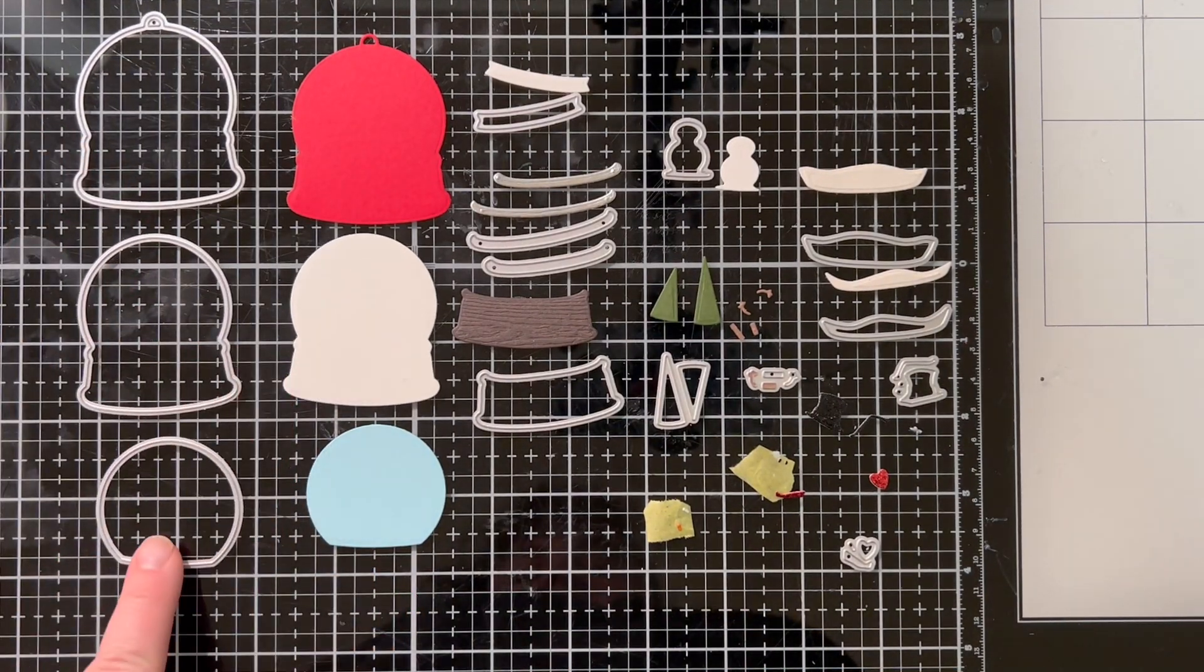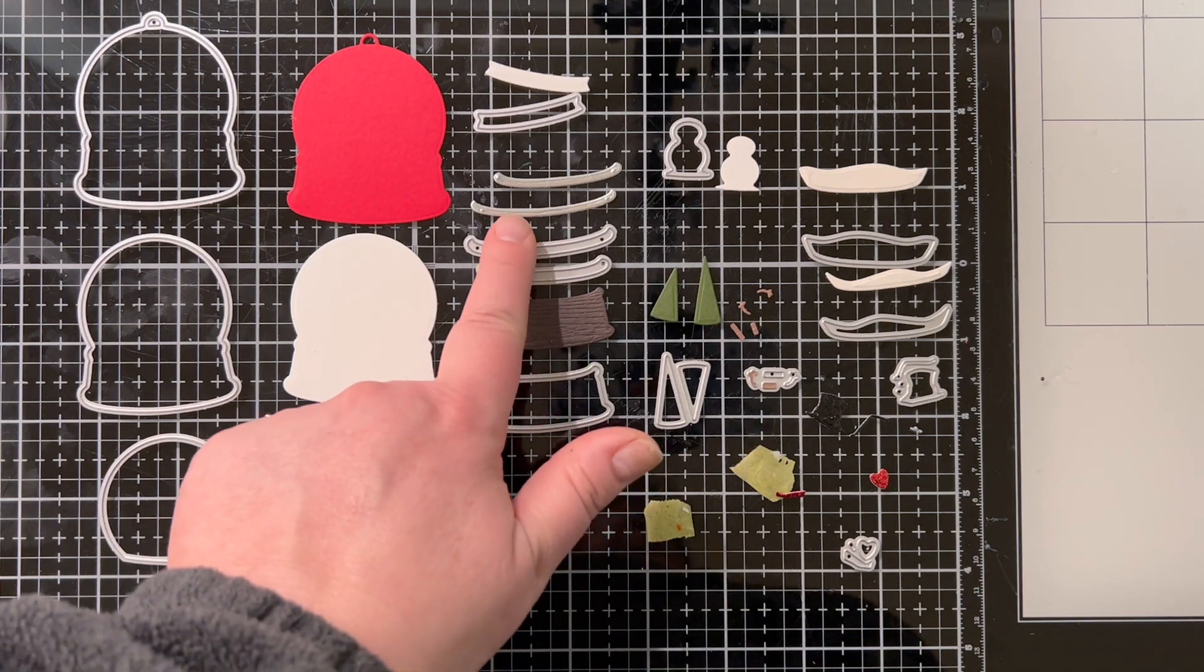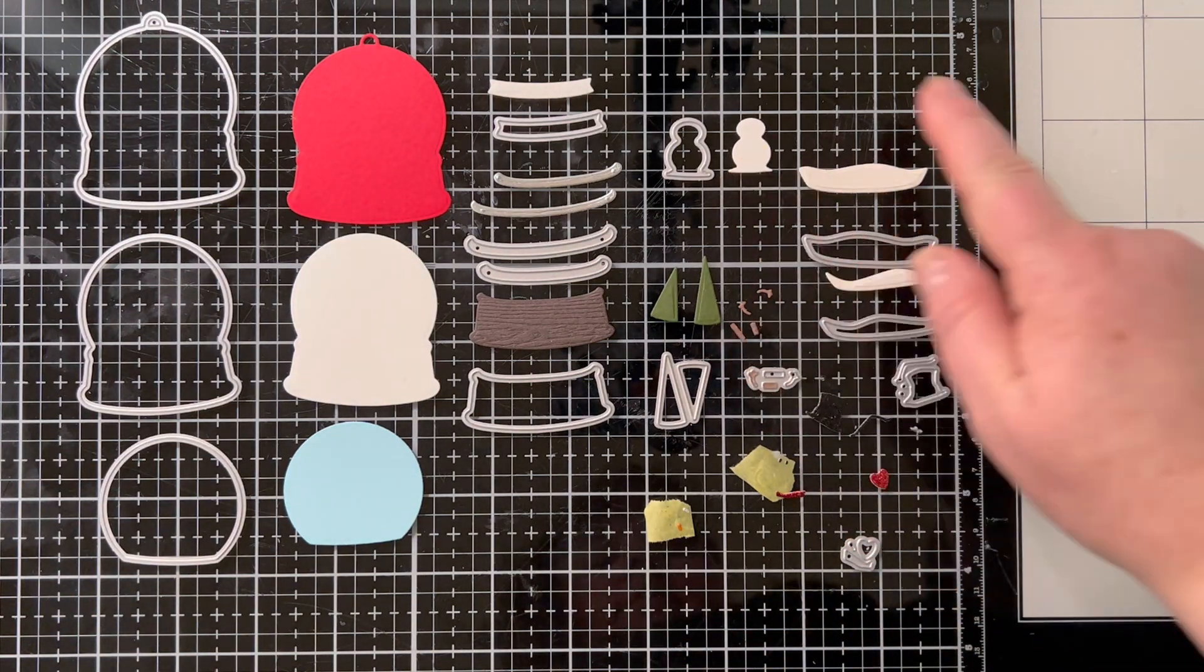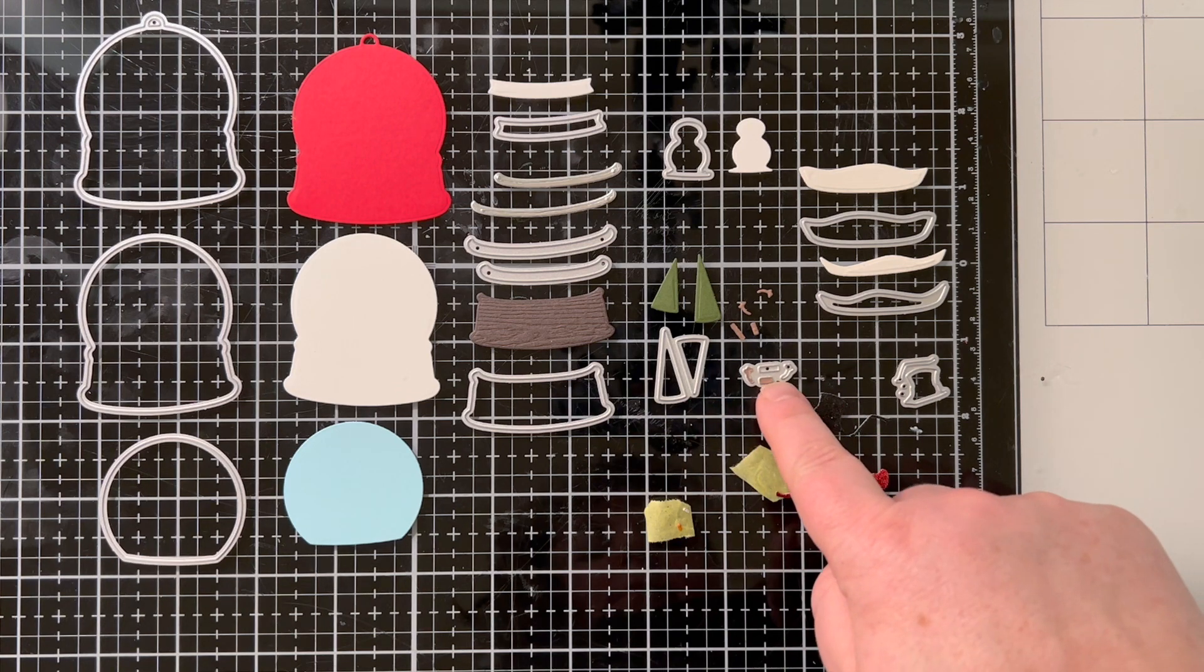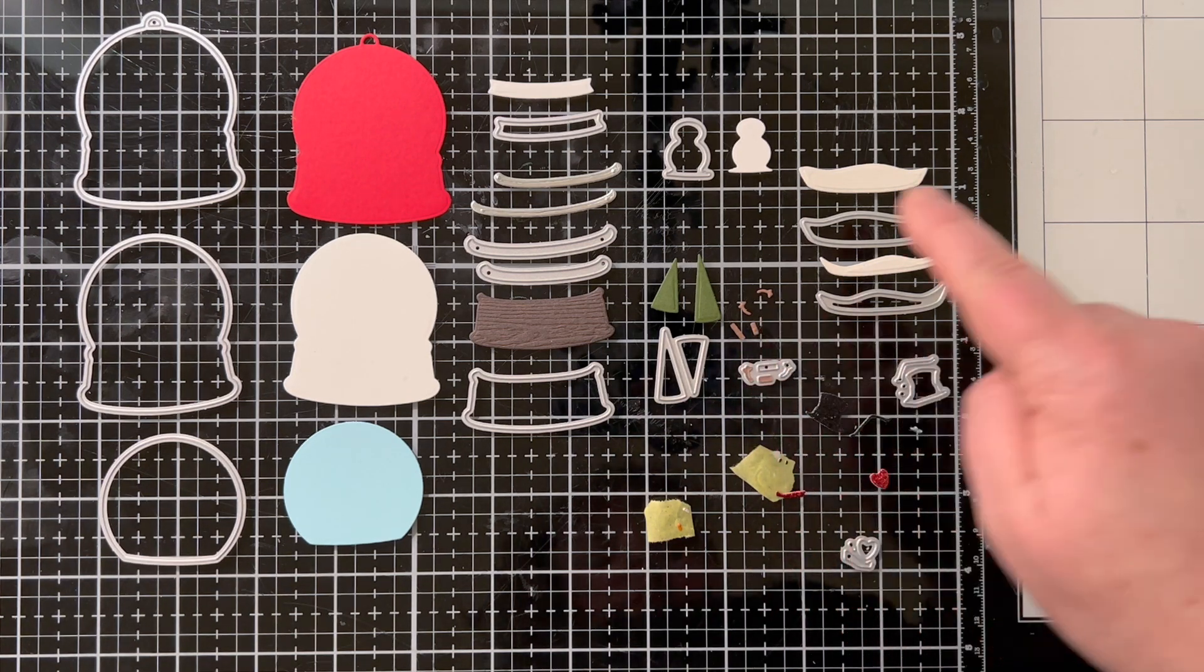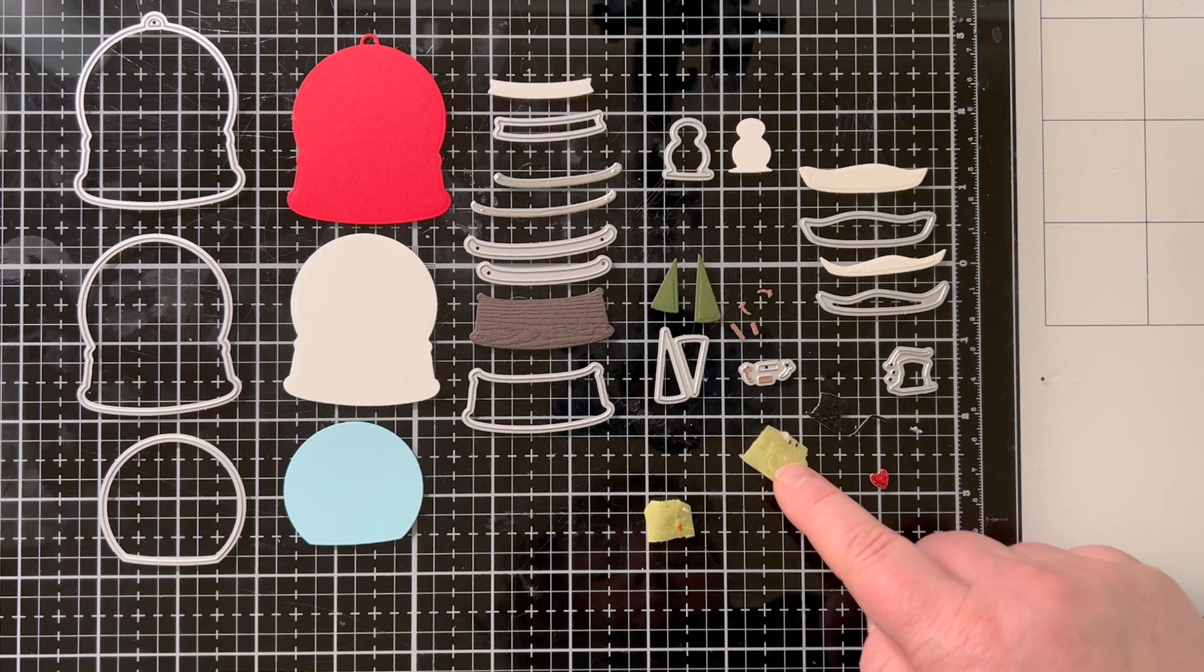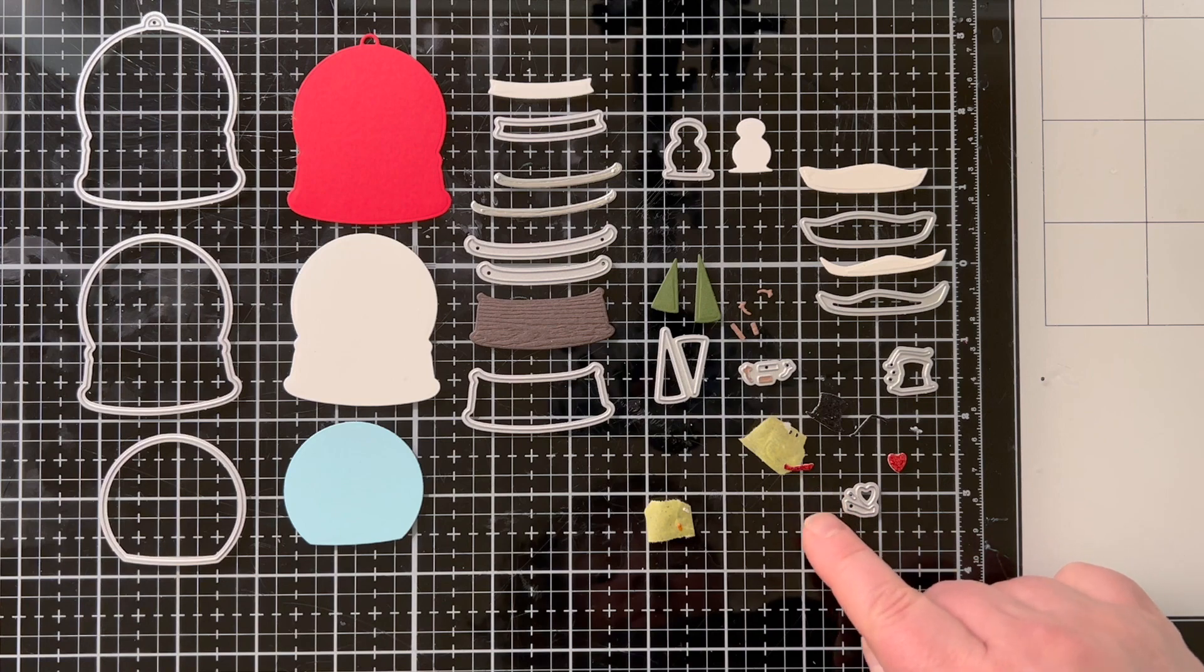Here's all the die cut pieces next to the die that cuts them out and I'm going to show you how to put these pieces together, how to layer them up and what each little piece actually is so you can put it together with ease when it's time for you to create. It is so cute, it's almost two and a half inches tall and about two inches wide, super cute for a tag but really cute to put on a card too.